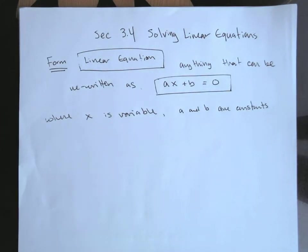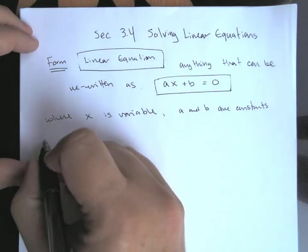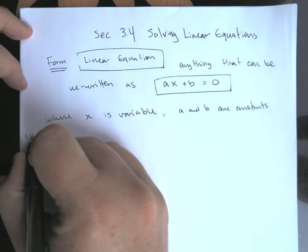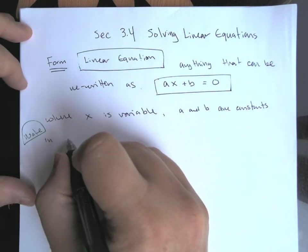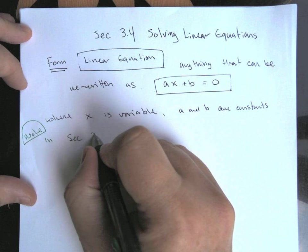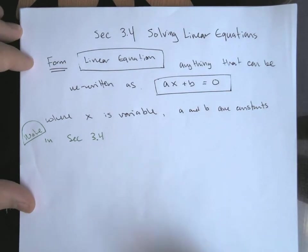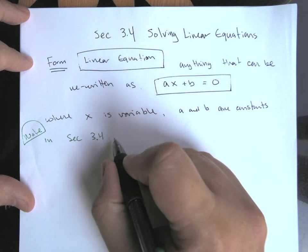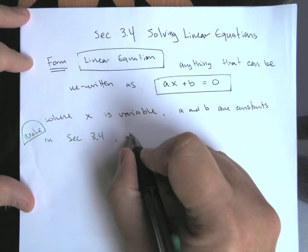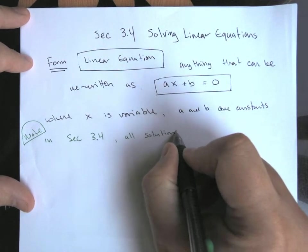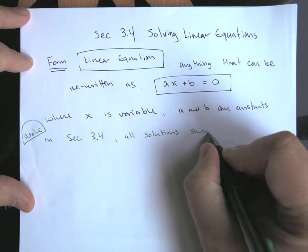In theory, A and B can be any kind of numbers. They could be fractions, decimals, all sorts of things. So in this particular section, 3.4, as far as the Pre-Algebra book goes, chapter three comes before chapter four, obviously. Chapter four is about fractions. So everything in section 3.4, all of our equations, all of our solutions should be whole numbers.